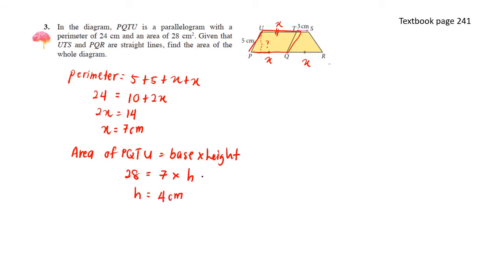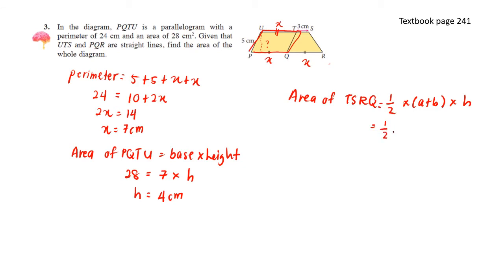Now we can find the area of trapezoid TSRQ. The area of TSRQ equals one half times the sum of the parallel sides times the height. The sum of the parallel sides is 3 plus 7, and the height is 4. So we have one half times 10 times 4, which gives us an area of 20 cm squared.